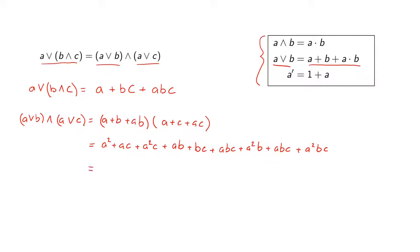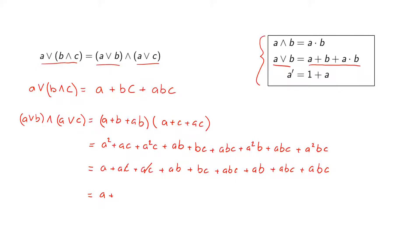In the first step, we use the fact that all elements are idempotent, so A squared equals A. This gives A plus AC plus AC plus AB plus BC plus ABC plus ABC. In the second step, we use characteristic two, meaning A plus A equals 0. The AC terms cancel, the ABC terms cancel, and the AB terms cancel, leaving A plus BC plus ABC — exactly matching the left-hand side, confirming equivalence in our Boolean ring.